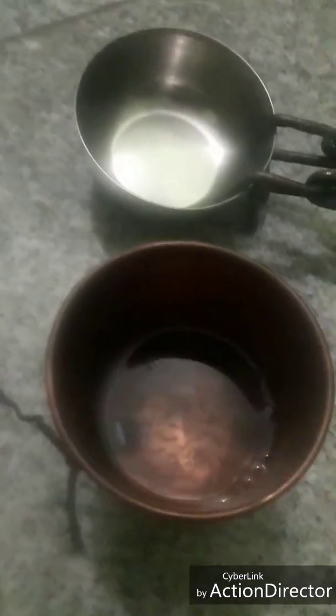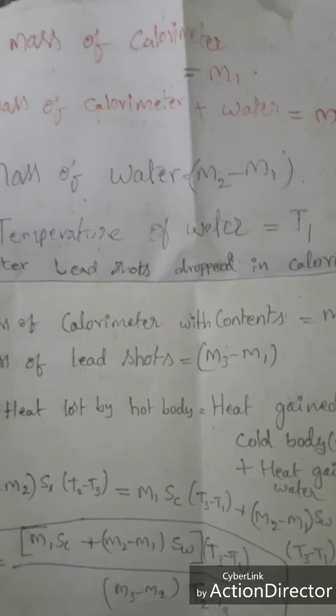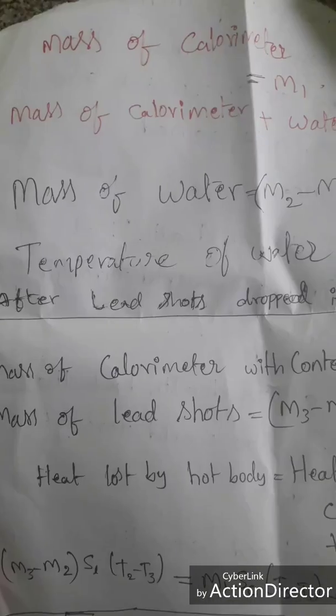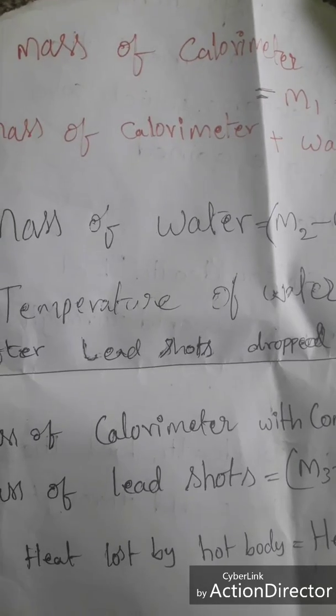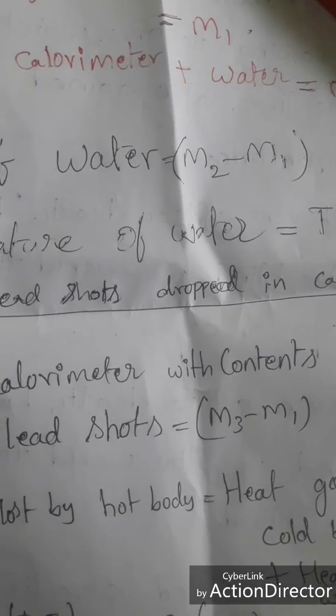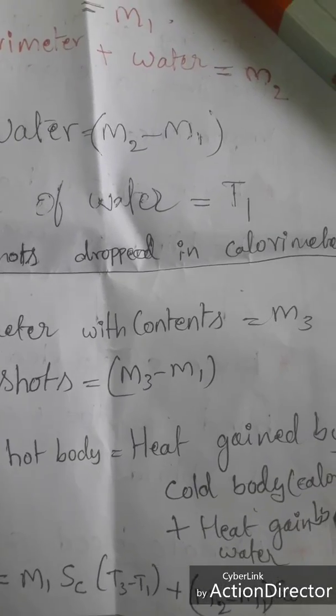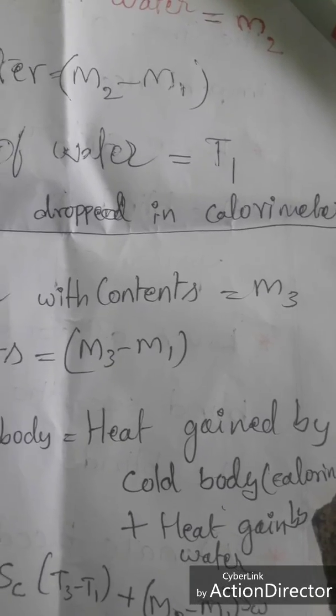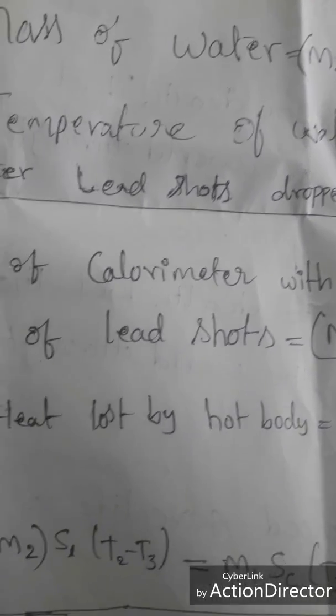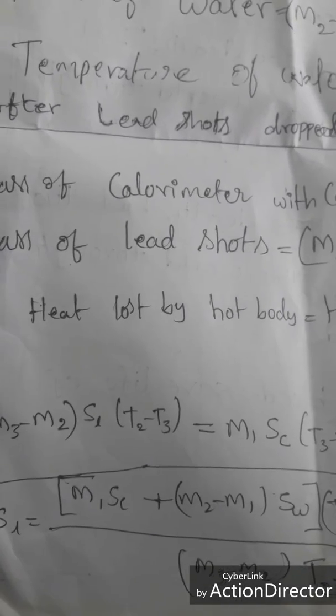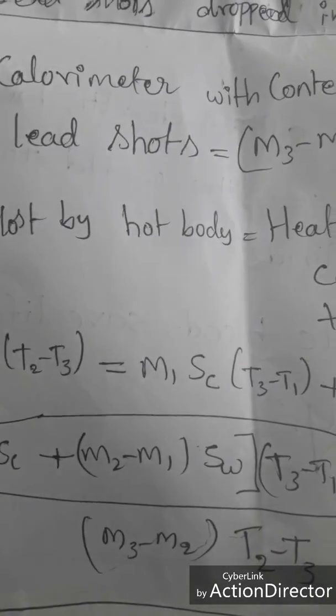After mixing, calculate the mass of the lead shots separately. Using the principle of the method of mixtures, as per the observations: mass of the calorimeter is M1, mass of the calorimeter plus water is M2, and mass of water only is M2 minus M1.